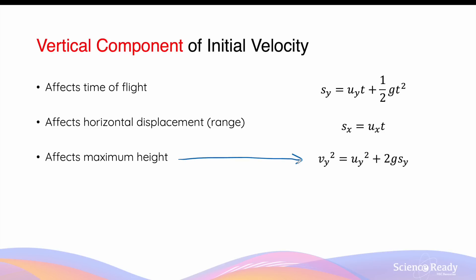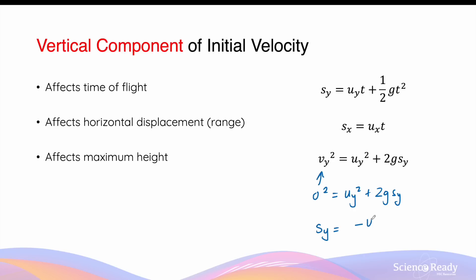The vertical component of initial velocity also affects the maximum height of the parabolic motion. At the maximum height, the vertical component of velocity vy equals zero, so: 0² = uy² + 2g·sy. Rearranging gives: sy = −uy² / (2g). In this equation, the maximum height is directly proportional to the square of the vertical component of initial velocity. If we double uy, the maximum height increases by a factor of 4.